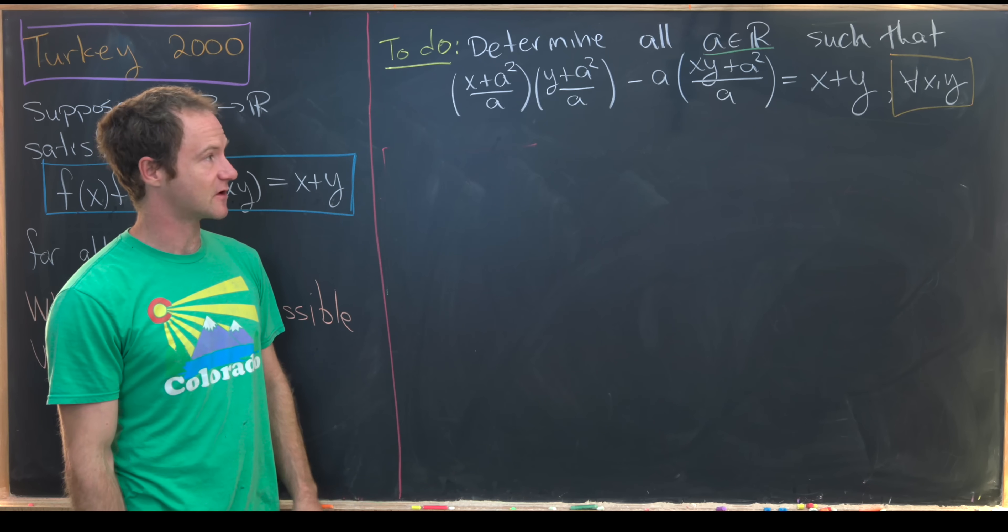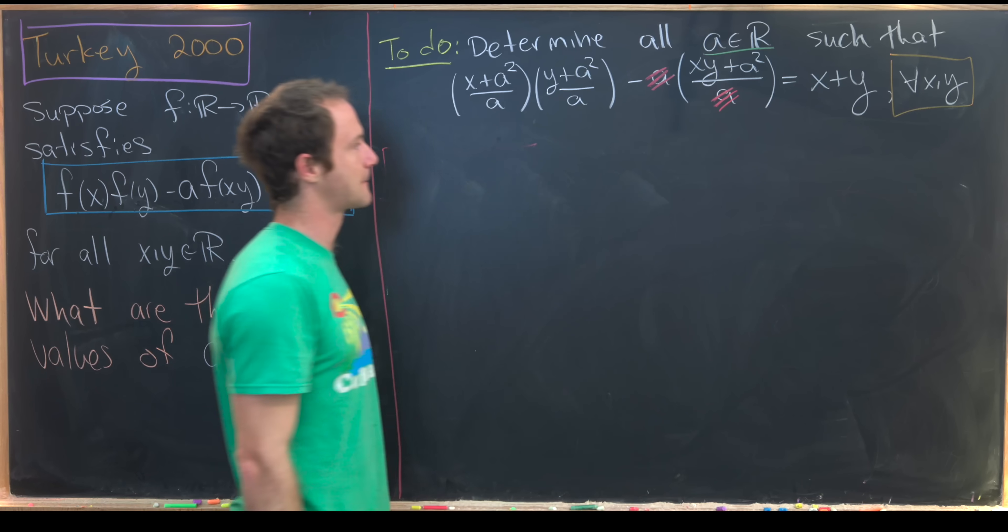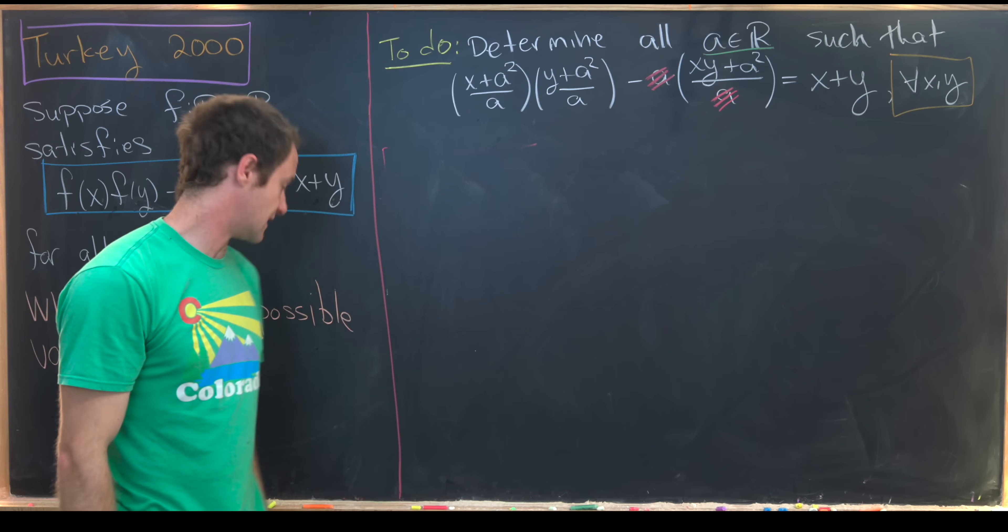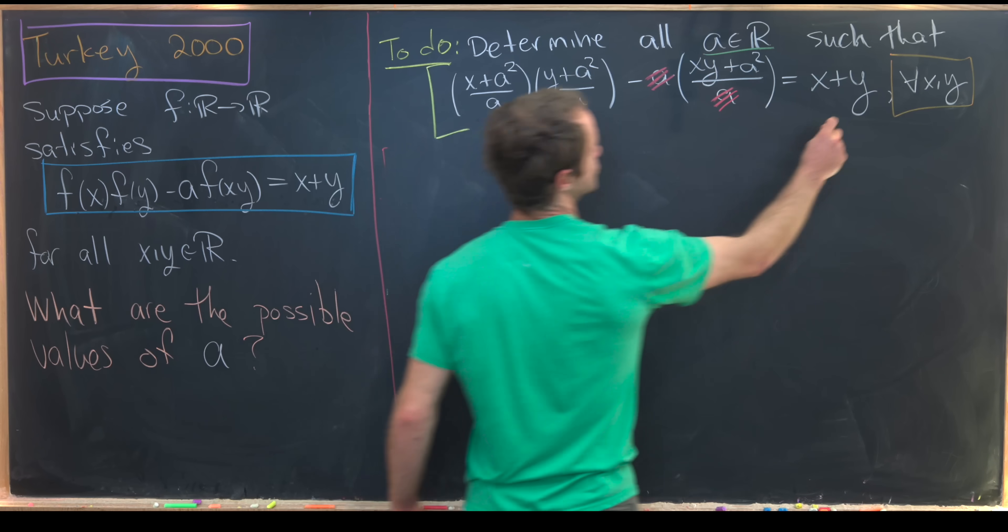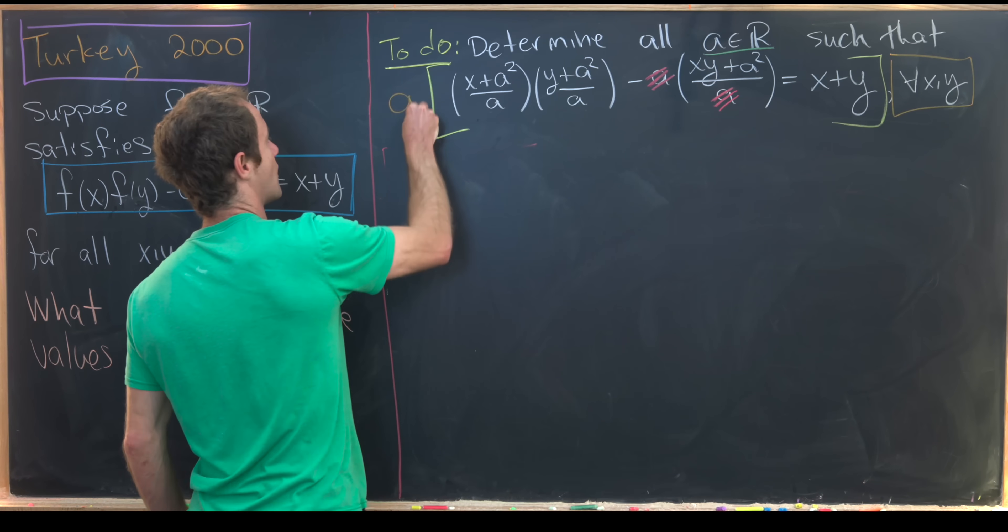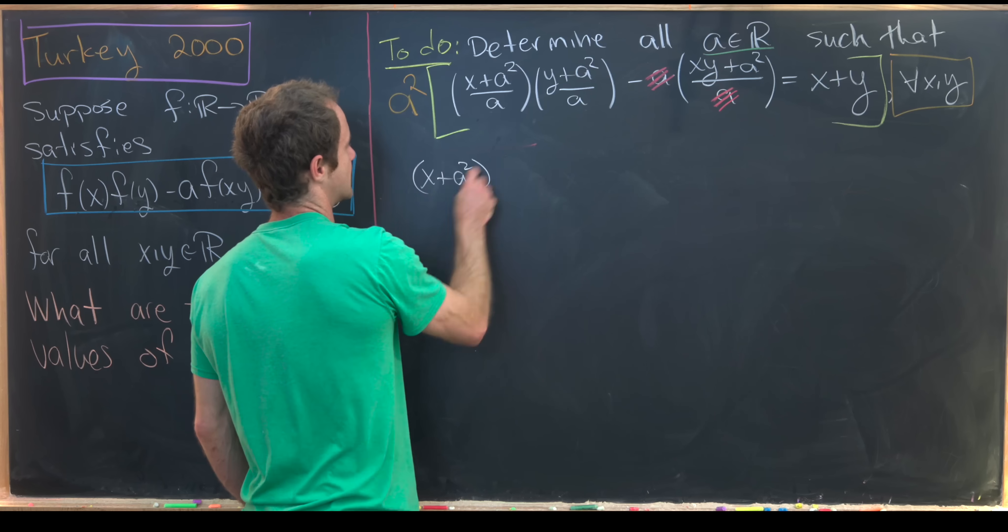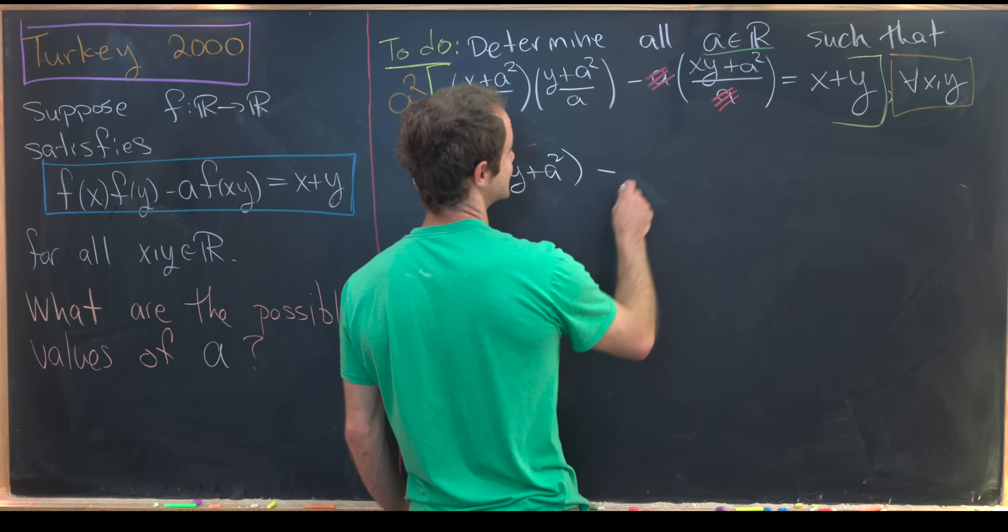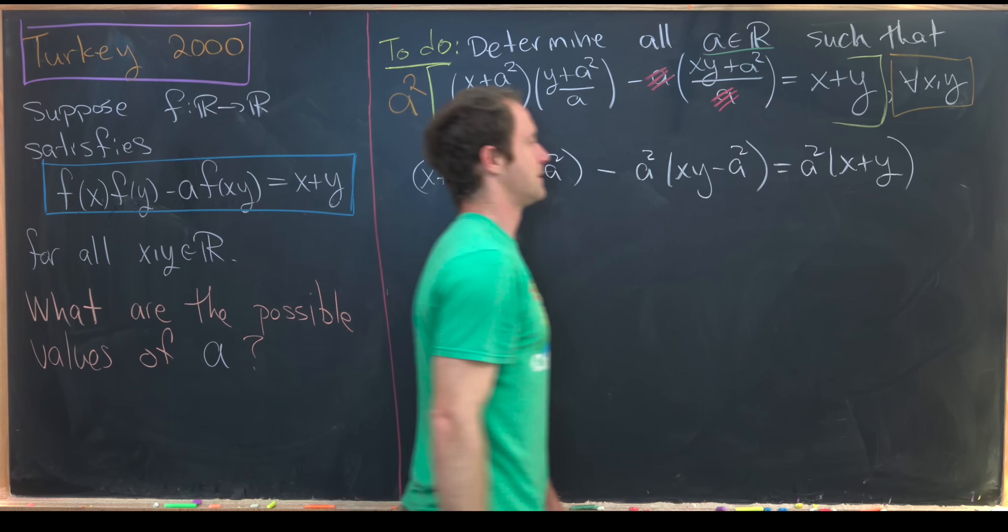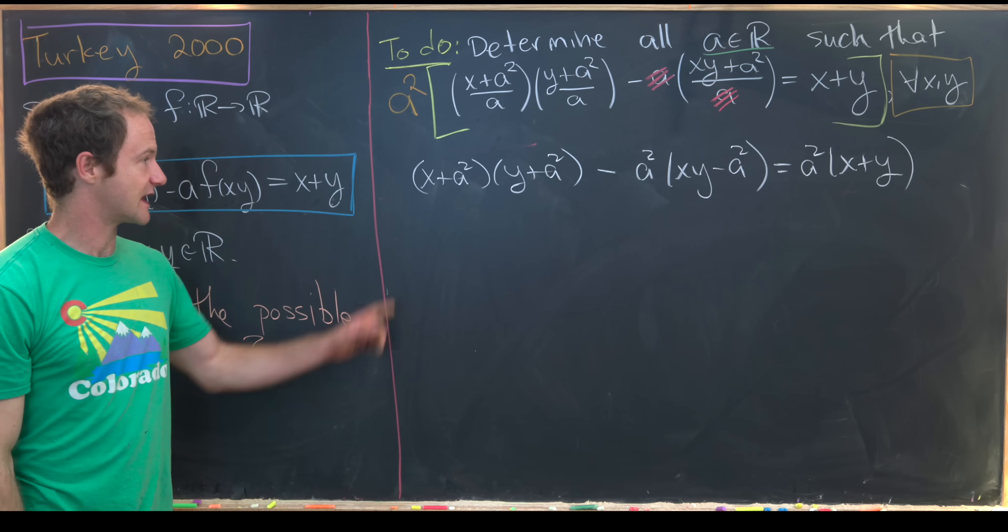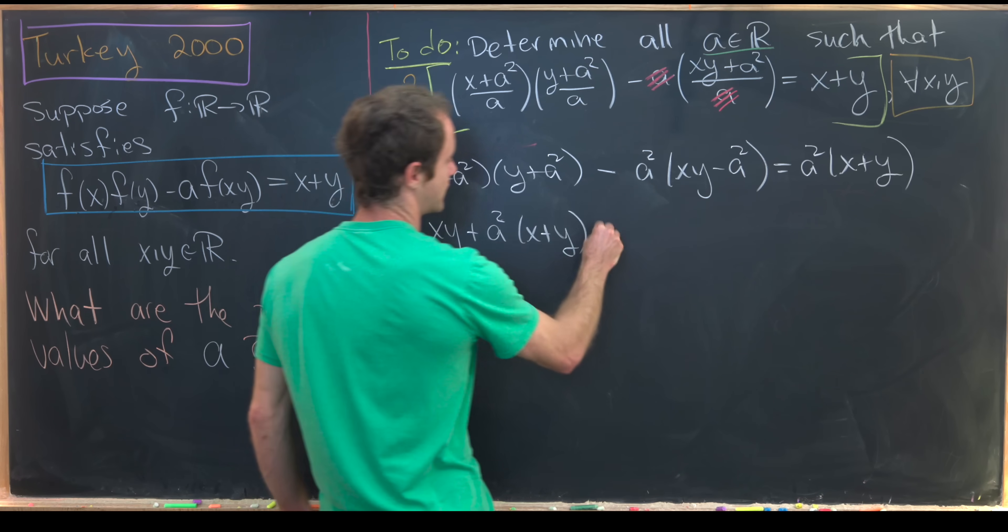Let's see how we could maybe simplify this. Maybe the most obvious thing to do first is to clear the denominators. So let's notice that this guy right here most definitely cancels this guy right here. But that being said, we still have an a^2 in the denominator from this a times a in the very first term. So let's take this entire equation and multiply it by a^2. And so that means that we don't have anything left in the denominator. So that's going to leave us with (x + a^2)(y + a^2) - a^2(xy) - a^2 equals a^2(x+y). And now we just have some simplification to do. Multiplying this out will give us xy + a^2(x+y) + a^4.